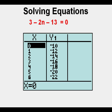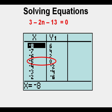Let's look at the table view by pressing second, then graph on our calculator. And we get this view. We can scroll up to where we see that y1 equals zero, and that proves that our answer is, in fact, n equals negative 5.